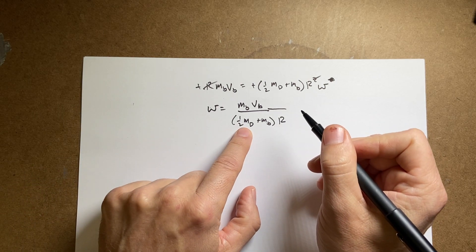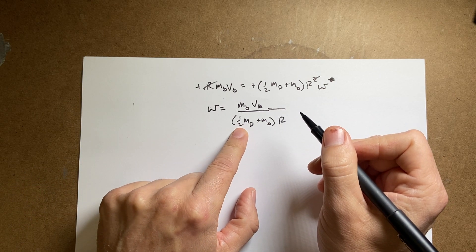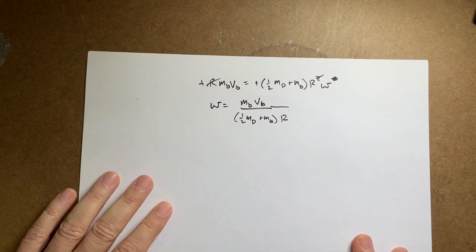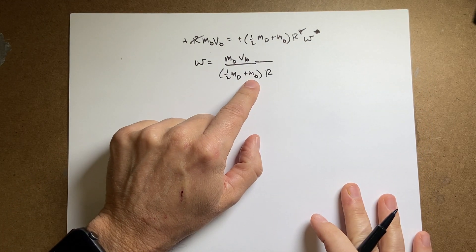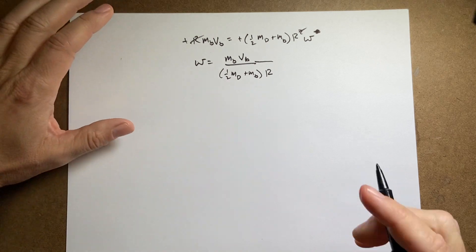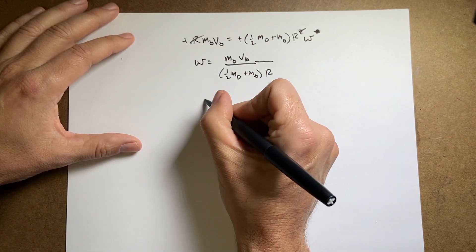You'll notice here that's 200 kilograms times a half, that's 100 kilograms. And this is the mass of the bullet which is 10 grams. So if you left that out it wouldn't be a big deal.